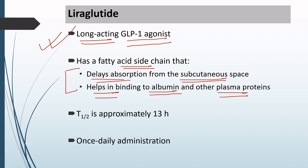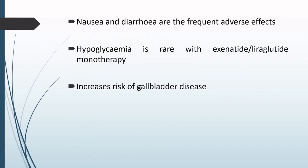The T-half of Liraglutide is approximately 13 hours, and it can be given once daily. Nausea and diarrhea are frequent adverse effects of Liraglutide.